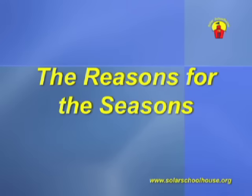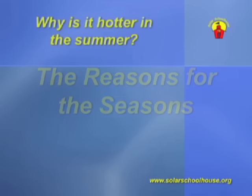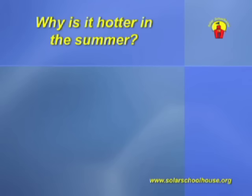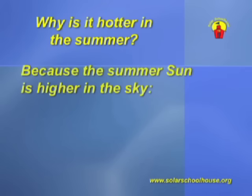We all know it's hotter in the summer, but why is that? You might think it's because the Earth is closer to the sun, but actually the opposite is true. Besides, when it's summer in the Northern Hemisphere, it's winter in the Southern Hemisphere. So why is it hotter in the summer? It's hotter in the summer because the sun's path is higher in the sky. This results in two things: it makes the days longer, and it makes the summer sun more intense.